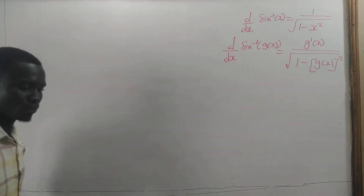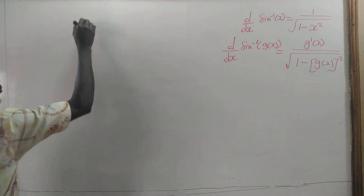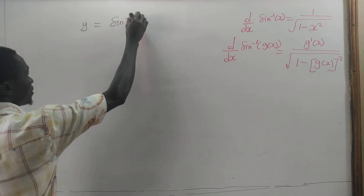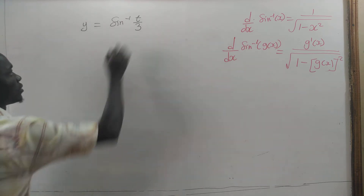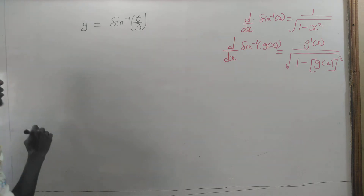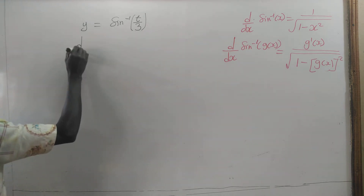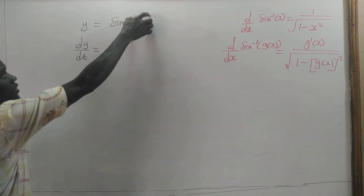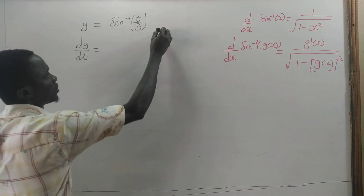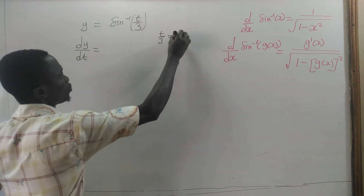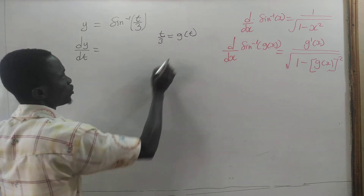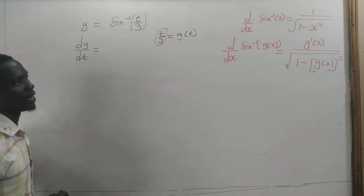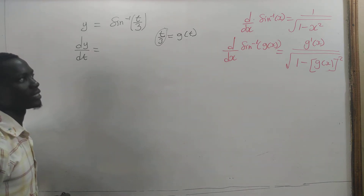Now let's consider this example. If you have y equal to sin inverse of t divided by 3, then the derivative of y with respect to t — here t divided by 3 is our g of t. So we have to differentiate t divided by 3 and divide it by the square root of 1 minus t divided by 3, all squared.